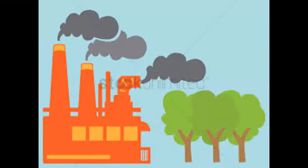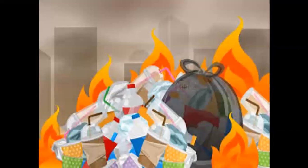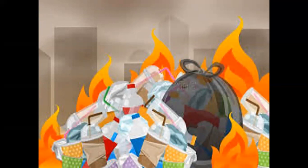The next cause is smoke that comes out of factories. Many factories manufacture so many things, and while manufacturing, waste materials come out in the form of liquid or air. That smoke makes the air dirty and creates air pollution. Next is burning of garbage, which is very harmful. Many people gather their garbage and burn it, which creates lots of smoke that goes into the air and makes it dirty.